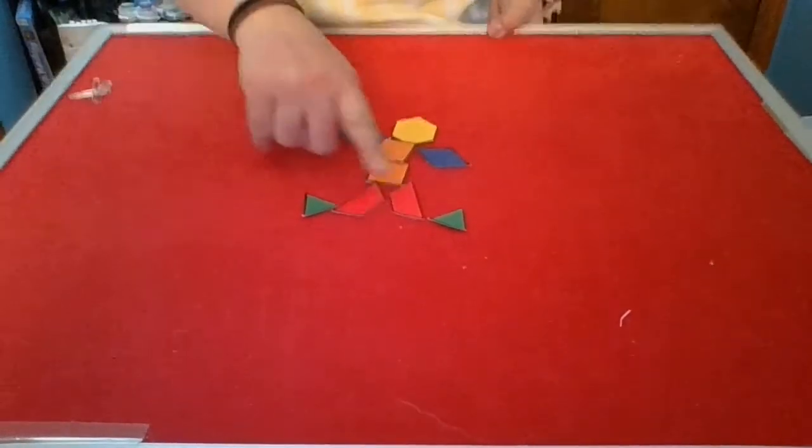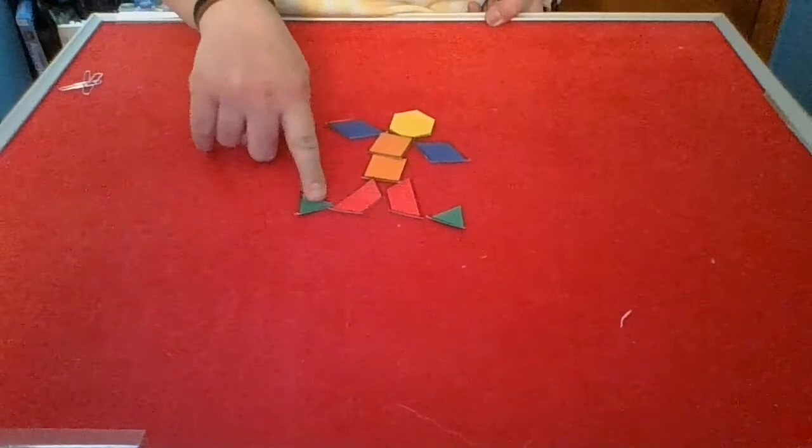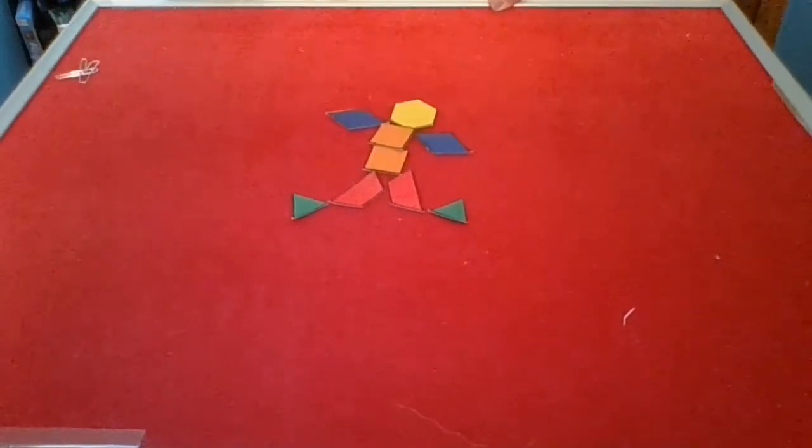The legs are made up of two trapezoids and the feet are two triangles.